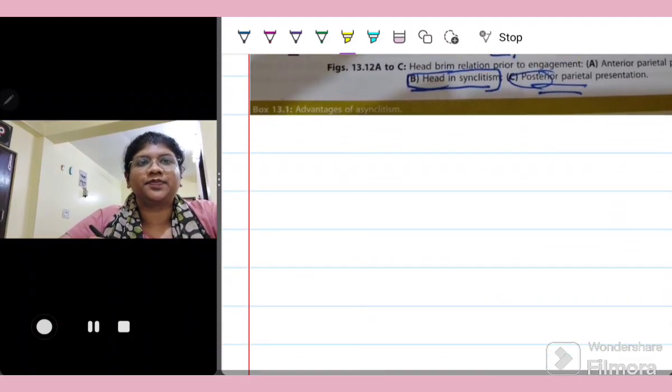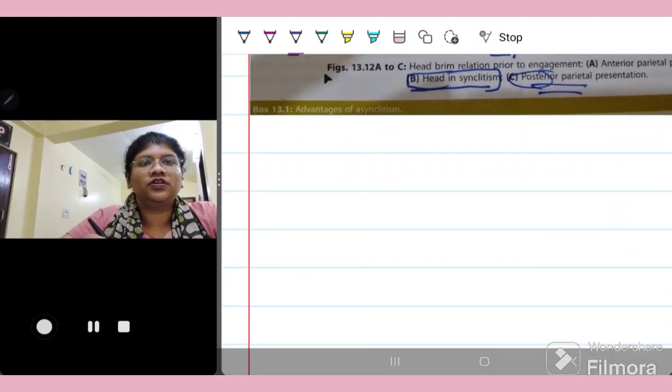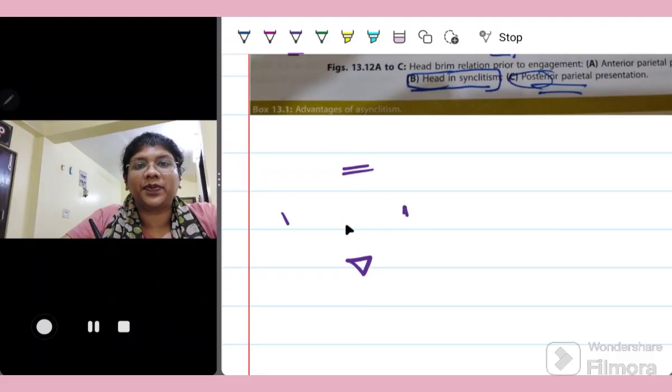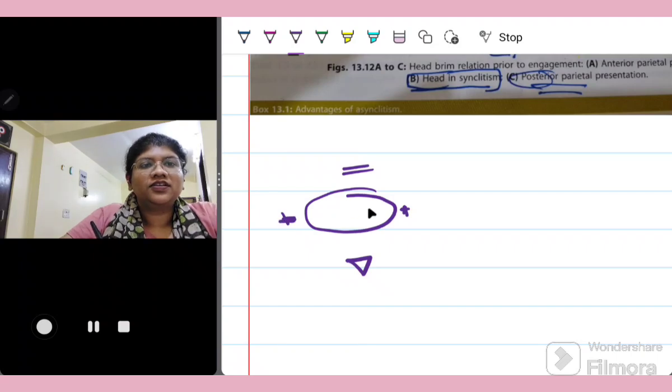Let me just diagrammatically explain this to you. So if this is the pubic symphysis, this is the sacrum. This is the pelvis that we are seeing in a patient who is lying in a lithotomy position. So ideally, when the head is coming, these are the ischial spines.